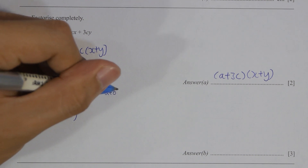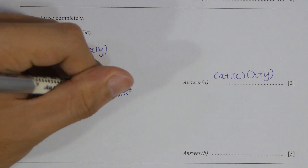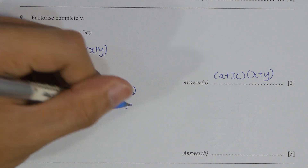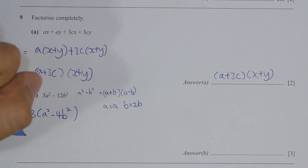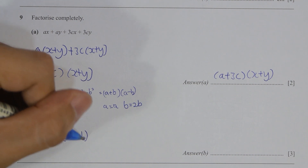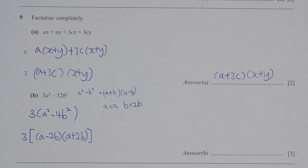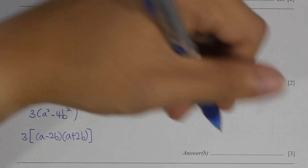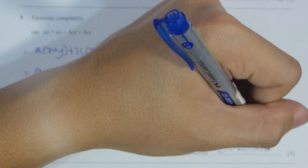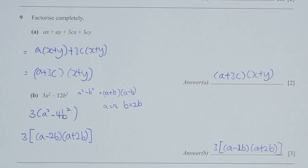For part B, the first thing I did was extract the common factor 3 out of both terms, leaving A squared minus 4B squared. Then I applied the difference of squares formula: A² minus B² equals (A + B)(A − B). Our A remains the same; however, our B is actually 2B here.